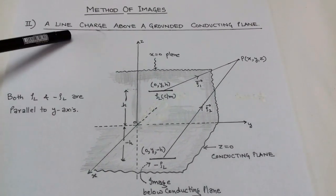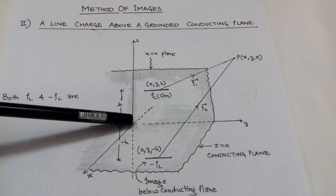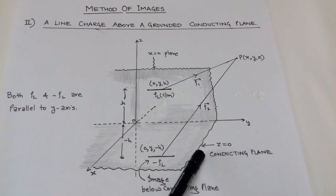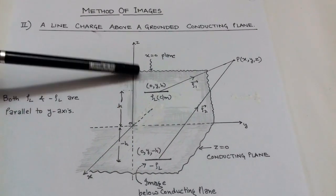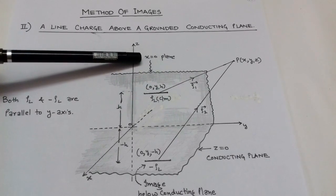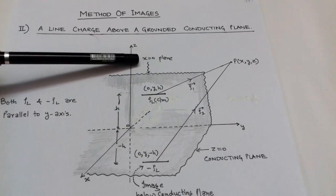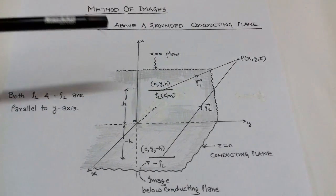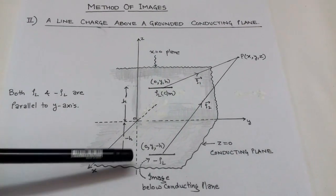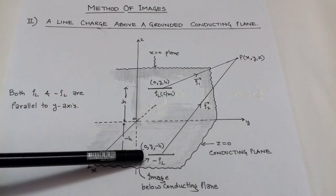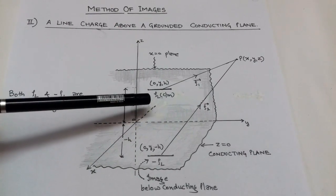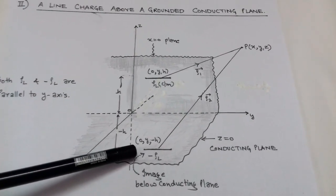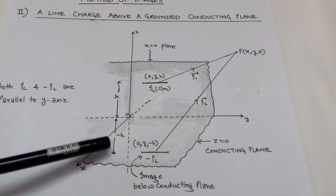In this case, we consider a line charge situated above a conducting plane. We consider a conducting plane situated at z equals 0, and the line charge rho_l is situated on the x equals 0 plane, that is the yz-plane, at a height of h. According to the method of images, the line charge density rho_l has its image below the conducting plane, that is minus rho_l. The coordinates of rho_l are (0, y, h) and the coordinates of its image are (0, y, -h).